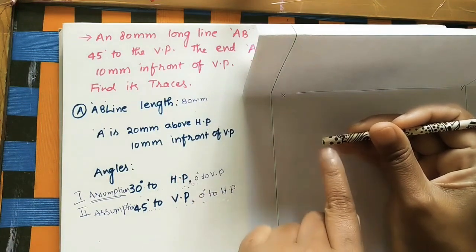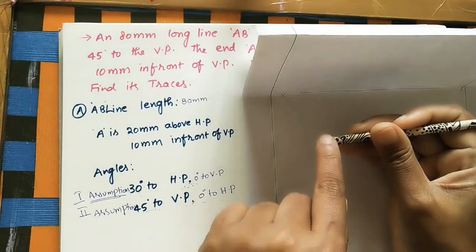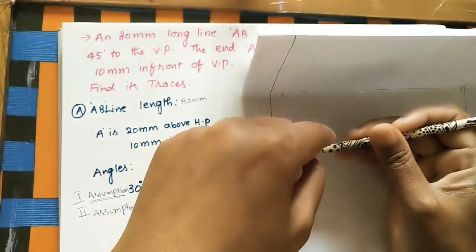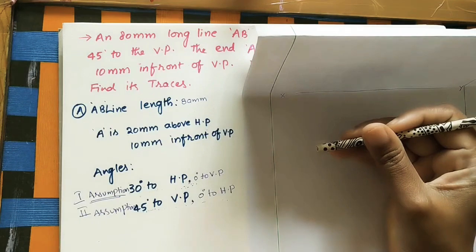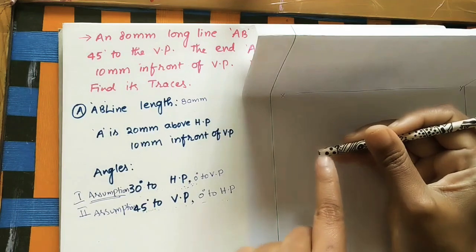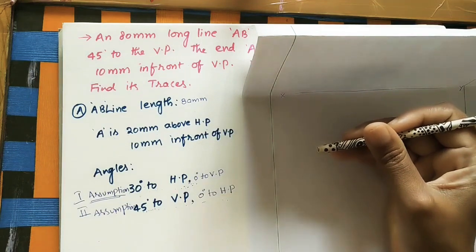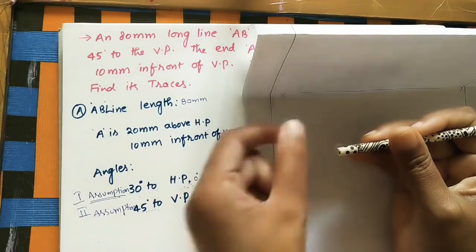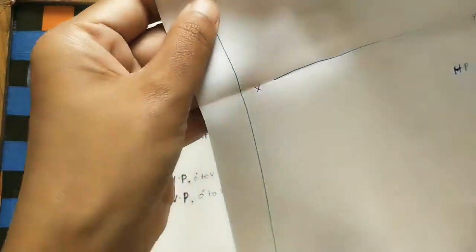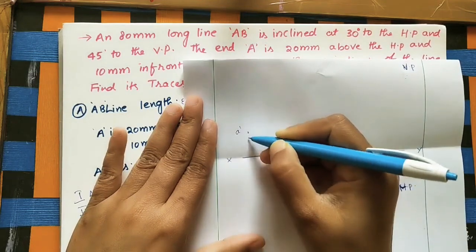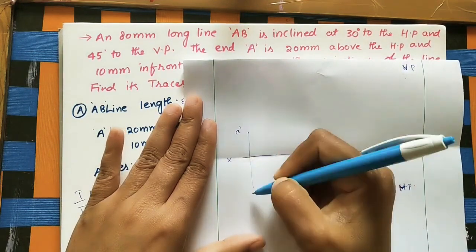The front view is seen on the vertical plane; the top view appears on the horizontal plane. Point A is 20 mm above HP, so we mark a-dash 20 mm above the XY line for the front view. We then fold the horizontal plane downward to get the 2D view, marking a-dash at 20 mm gap.